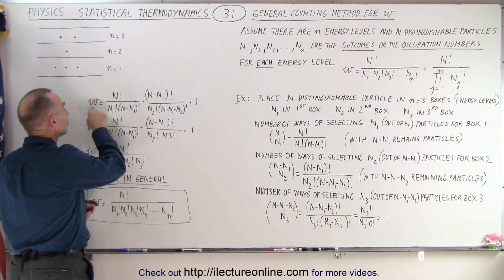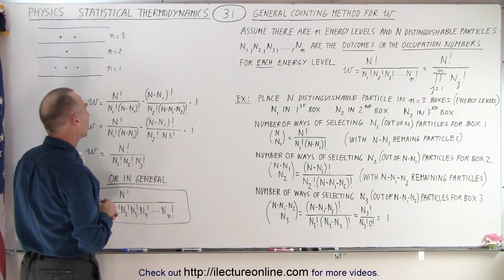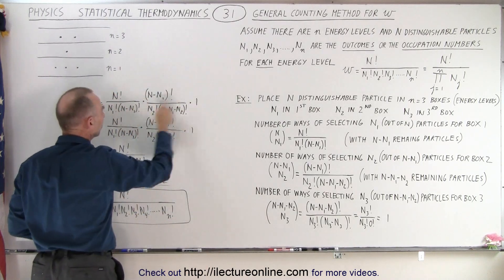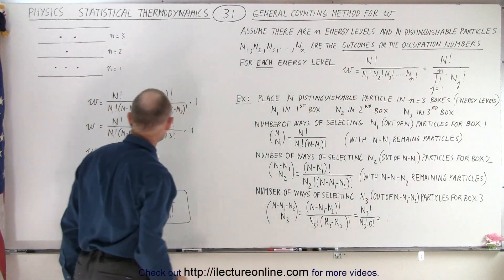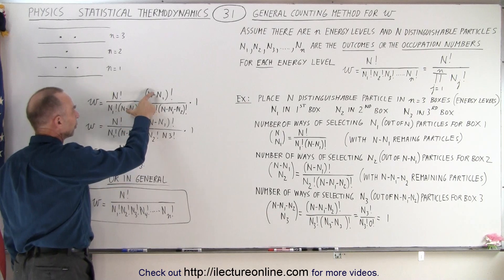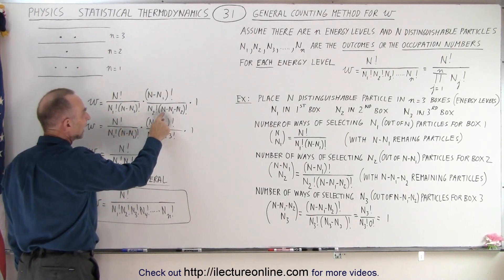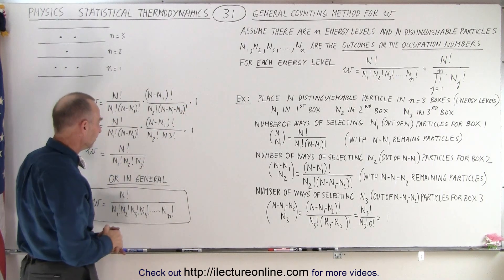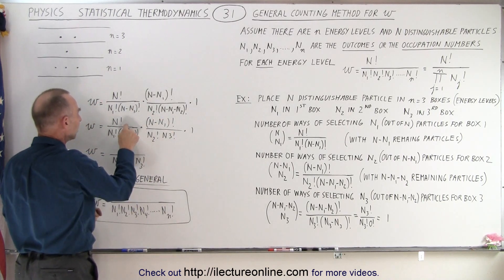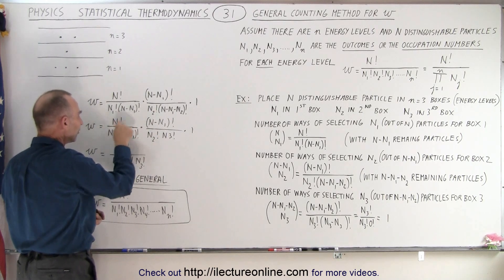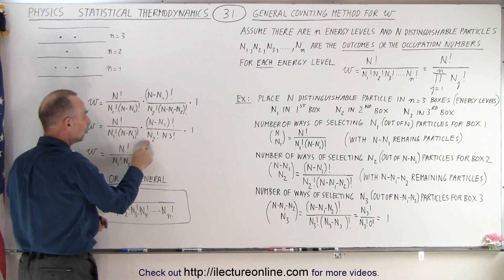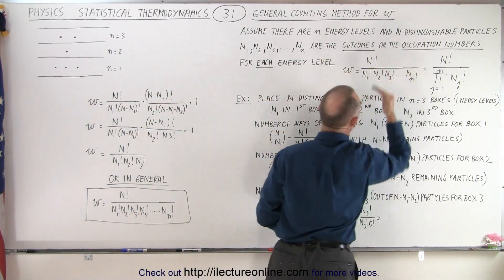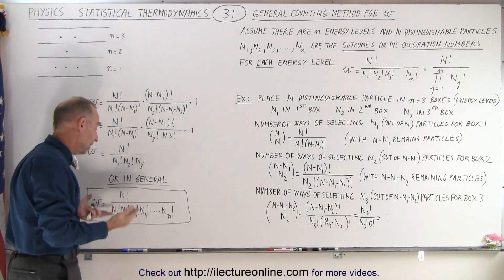When we calculate W for all of the particles, we multiply together the number of ways for box 1, box 2, and box 3. Notice that the N minus n1 factorial terms cancel in the numerator and denominator. We also know that N minus n1 minus n2 simply becomes n3. So in the numerator we end up with simply N factorial, and in the denominator we have n1 factorial times n2 factorial times n3 factorial — exactly the equation shown here, but only for three boxes.